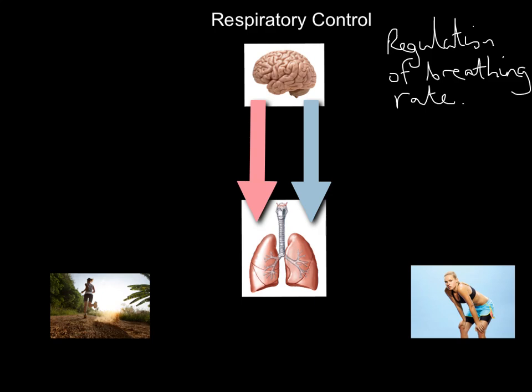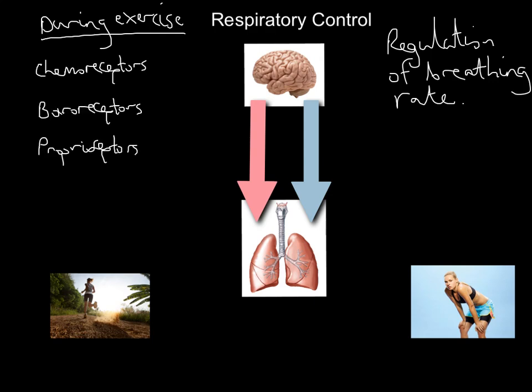What we're going to talk about is how do we control breathing rate during exercise. Let's start at the end point: breathing rate has to increase — I need to be breathing faster and deeper. How do I go about doing that? Let's think back to the heart. How did the heart start beating faster? We're going to go back to three old friends: chemoreceptors, baroreceptors, and proprioceptors.